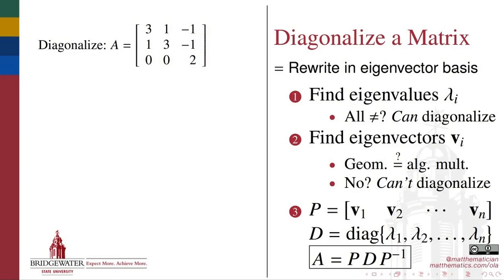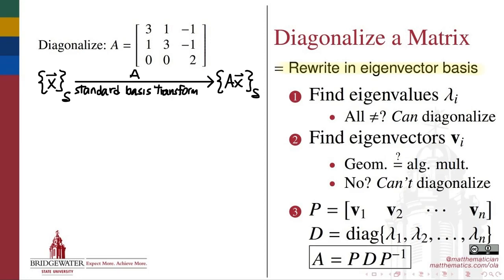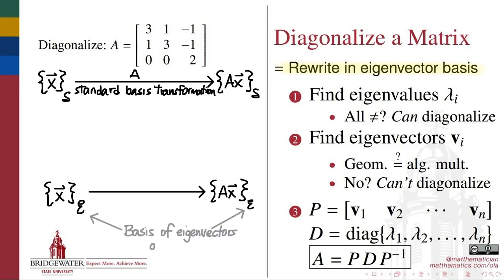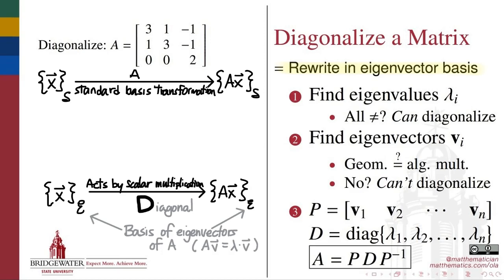Diagonalizing a matrix means rewriting it in terms of a basis of its eigenvectors, so that instead of the standard basis action of this matrix — which can be difficult to understand in its regular form — we will instead seek the eigenbasis effect of this transformation, which will be very simple. By definition, eigenvectors are vectors on which the matrix A acts by scalar multiplication. Therefore, if we can write a matrix for this transformation in a basis of its eigenvectors, that matrix will be diagonal, with only the entries on the diagonal possibly nonzero.